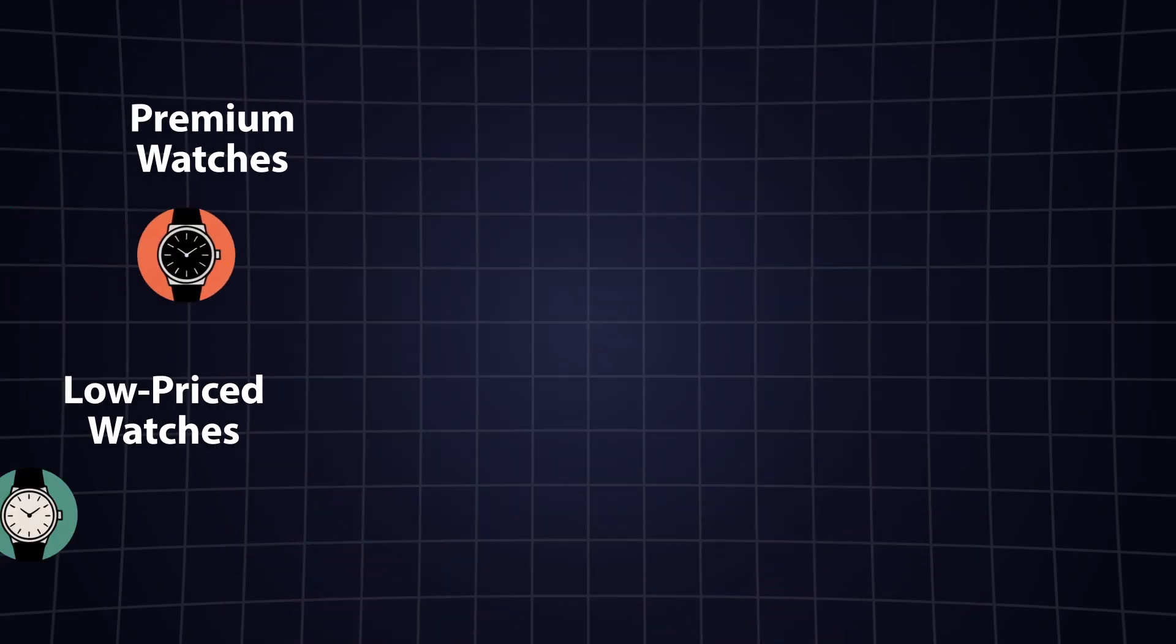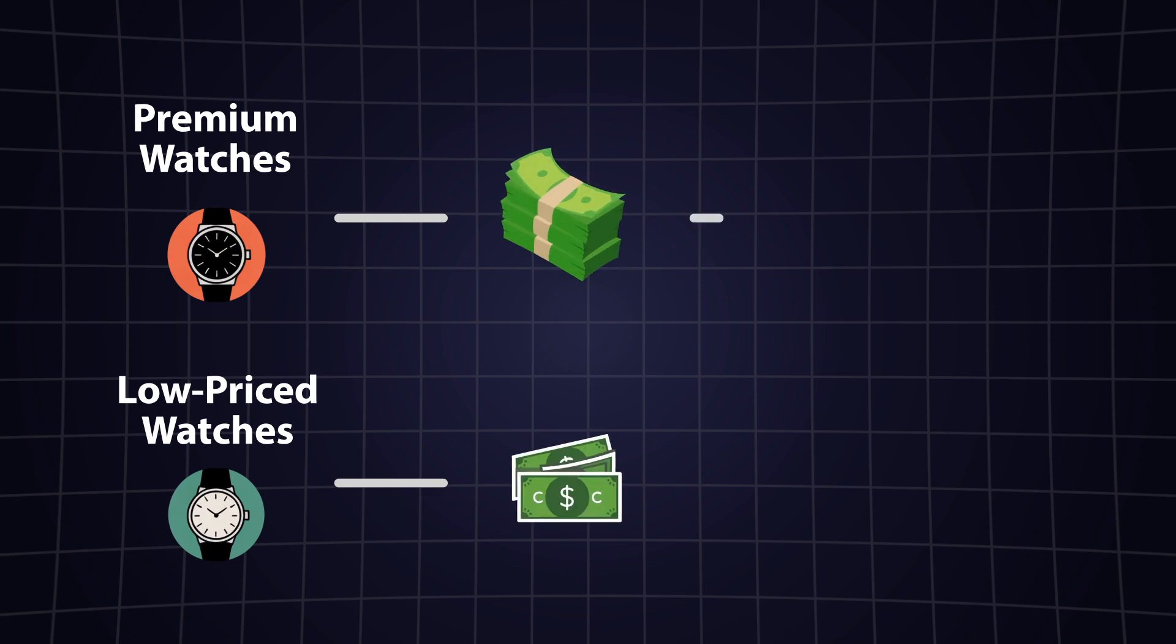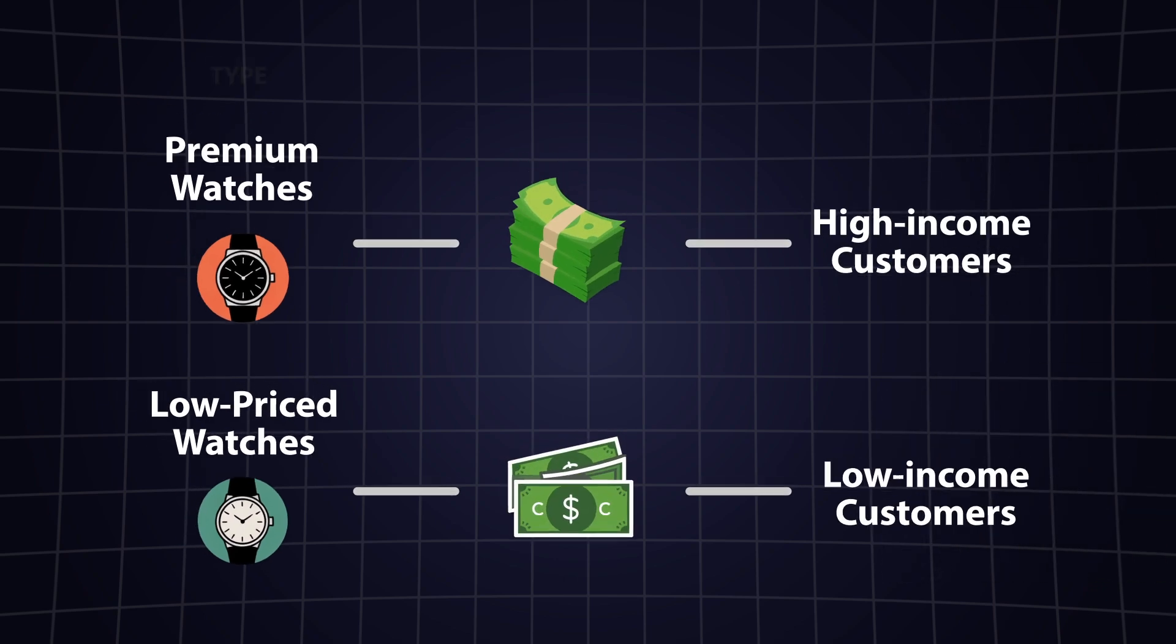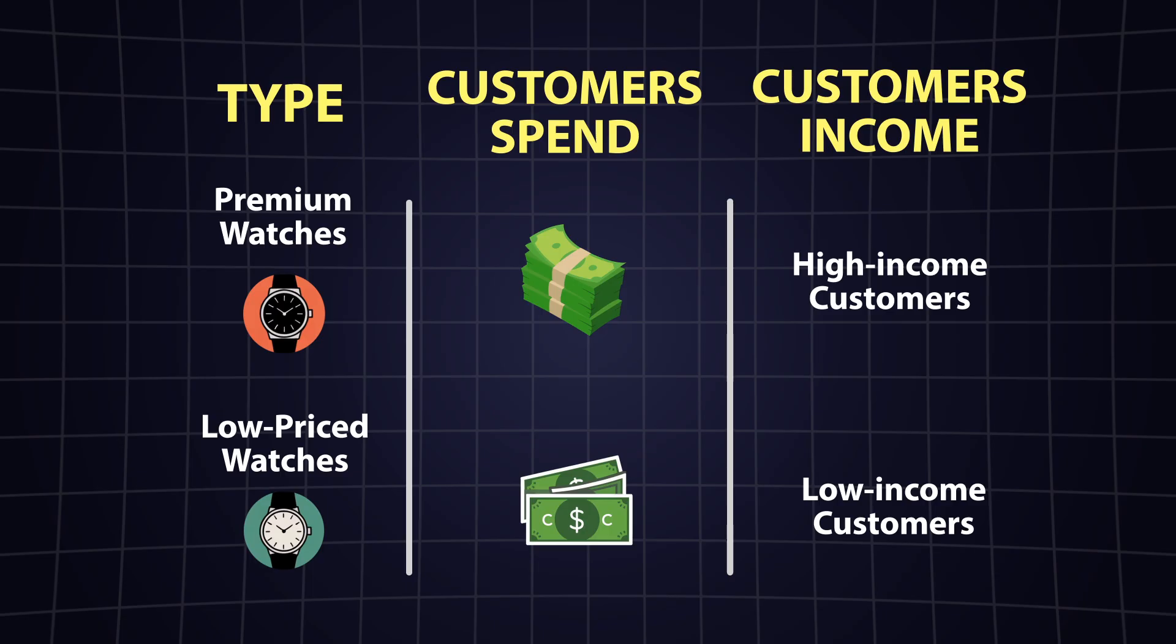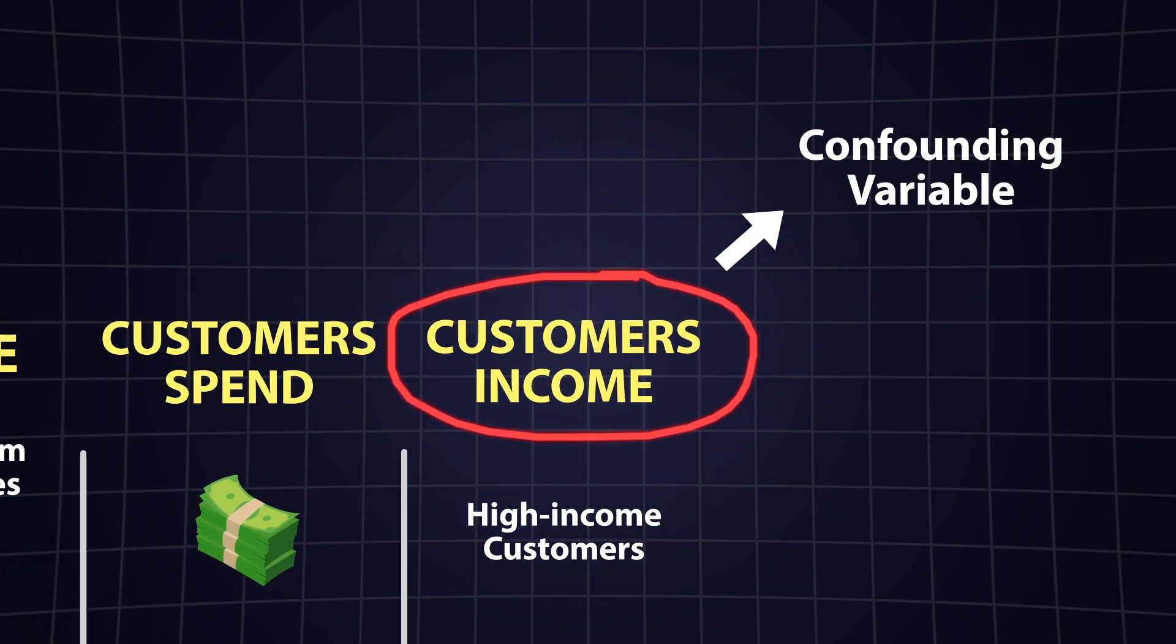But what if the real reason is that wealthier customers both like browsing premium watches and tend to spend more in general? Here customer income is the confounding variable, not the watches.